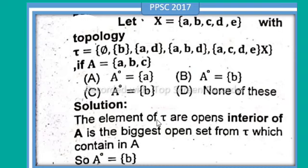The element of τ, or open interior of A, is the biggest open set from τ which contains in A. So A interior is equal to set b.